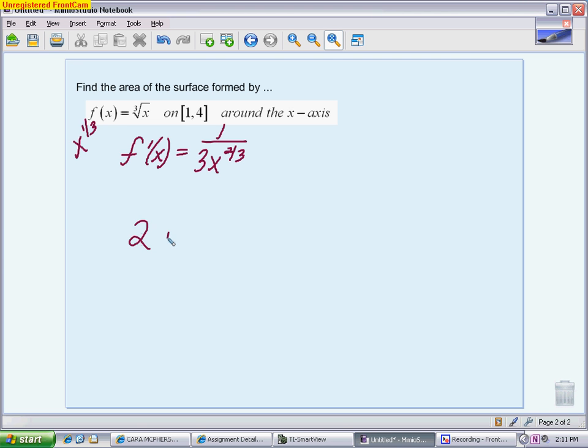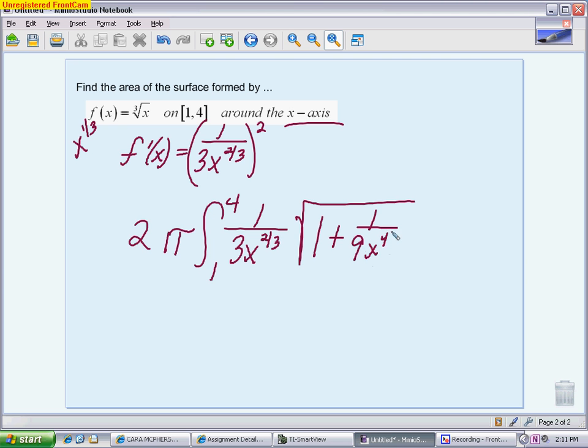Your formula has a 2π out front, integral from 1 to 4. The one thing that's different about surface area is you have to put your original function if you're going around the x-axis, and your x if you're going around the y-axis. So we're going to put our original function around it because we're going around the x-axis. And then we're going to take the square root of 1 plus that squared. So I'm going to square it out. When I square it out, I get 1 over 9x to the 4/3.